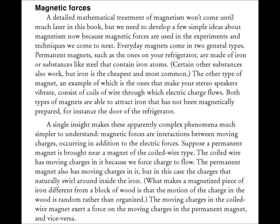Permanent magnets, such as the ones on your refrigerator, are made of iron, or substances like steel that contain iron atoms. Certain other substances also work, but iron is the cheapest and most common. The other type of magnet, an example of which is the ones that make your stereo speakers vibrate, consist of coils of wire through which electric charge flows. Both types of magnets are able to attract iron that has not been magnetically prepared, for instance, the door of the refrigerator.